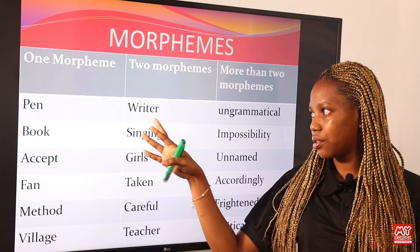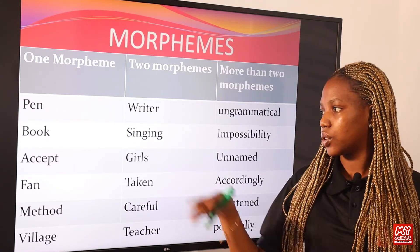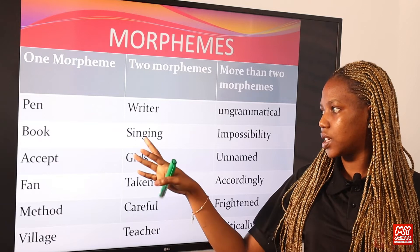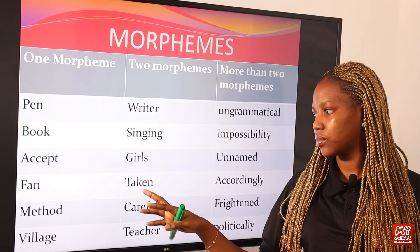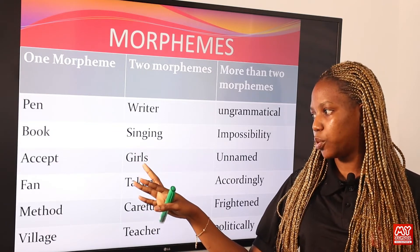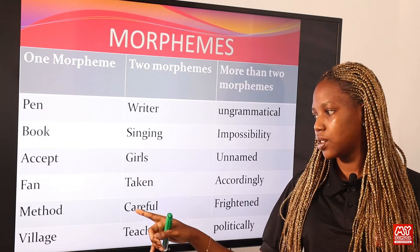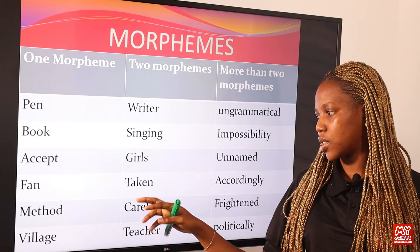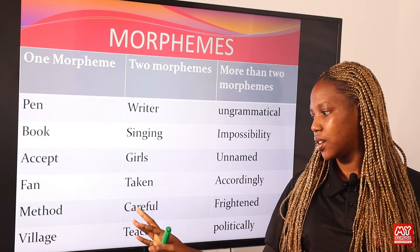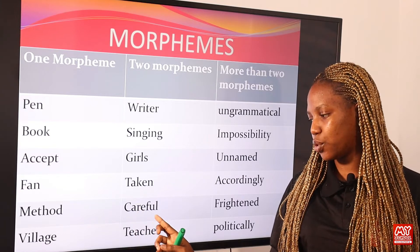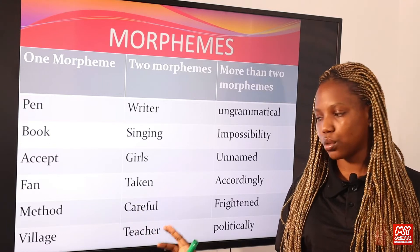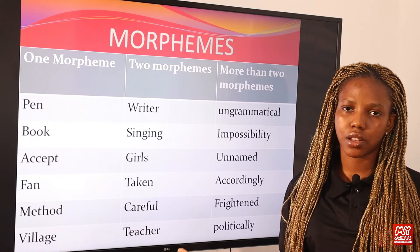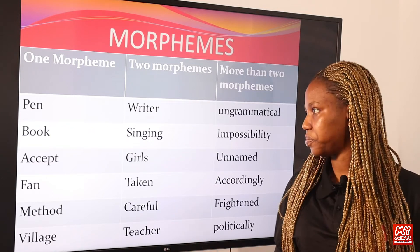Now let's take a look at two morphemes. We have 'write' plus '-er' equals 'writer'. 'Sing' plus '-ing' equals 'singing'. 'Girl' plus '-s' equals 'girls'. 'Take' plus '-n' equals 'taken'. 'Care' plus '-ful' equals 'careful'. 'Teach' plus '-er' equals 'teacher'. These are all examples of two morphemes.